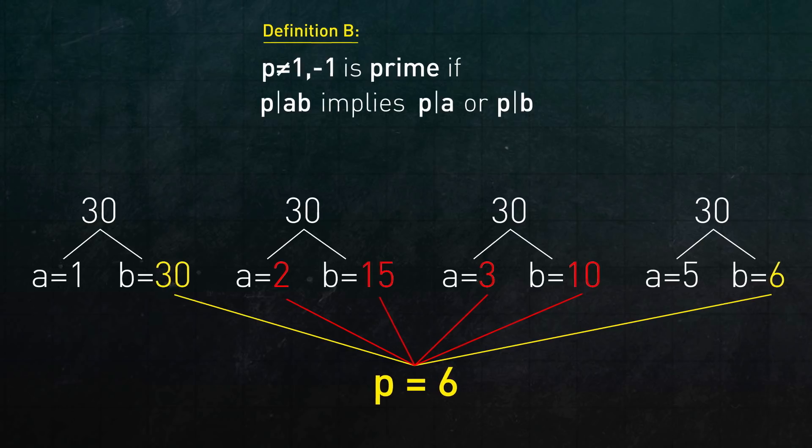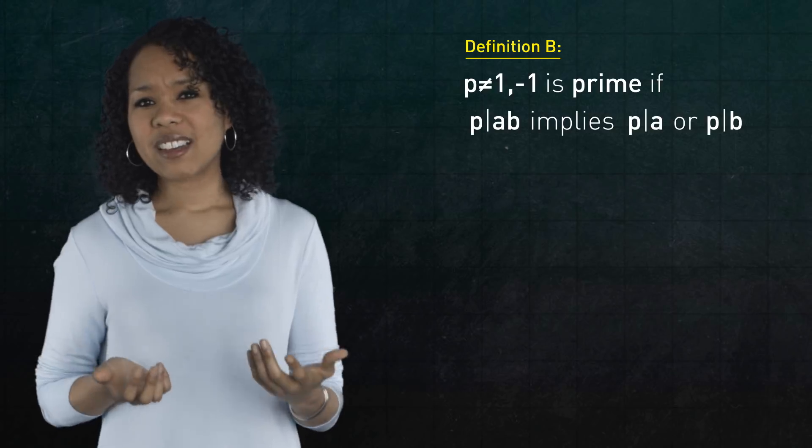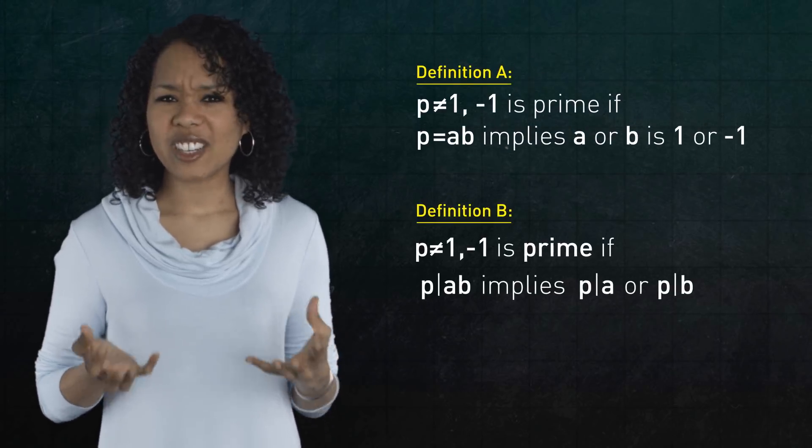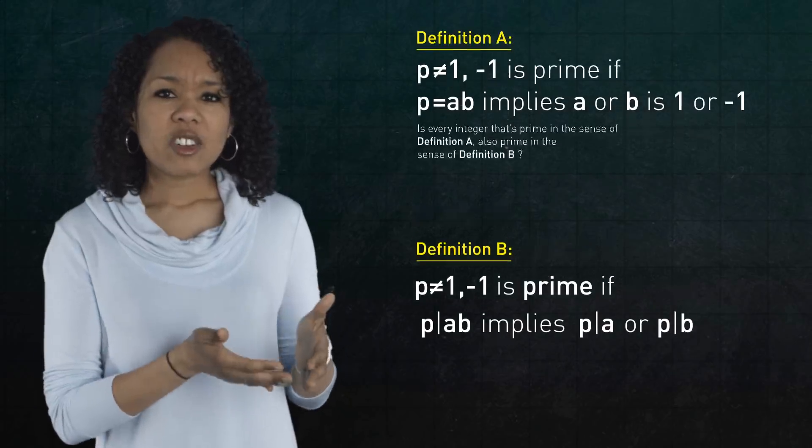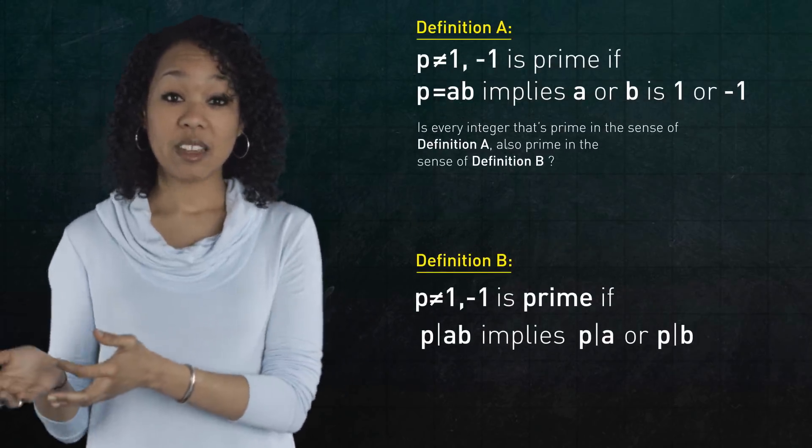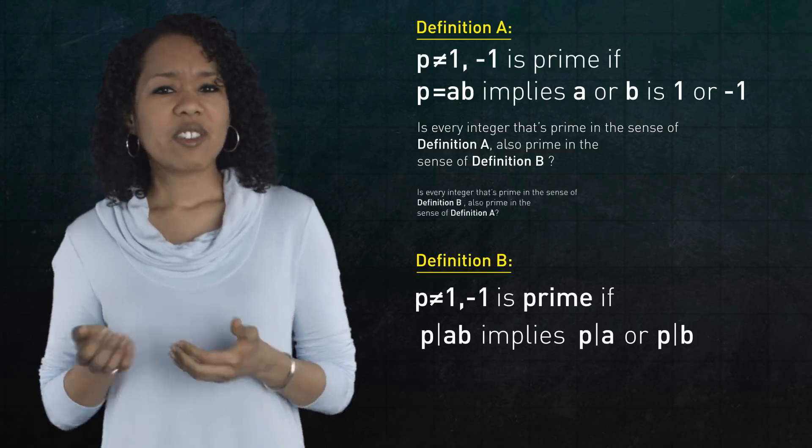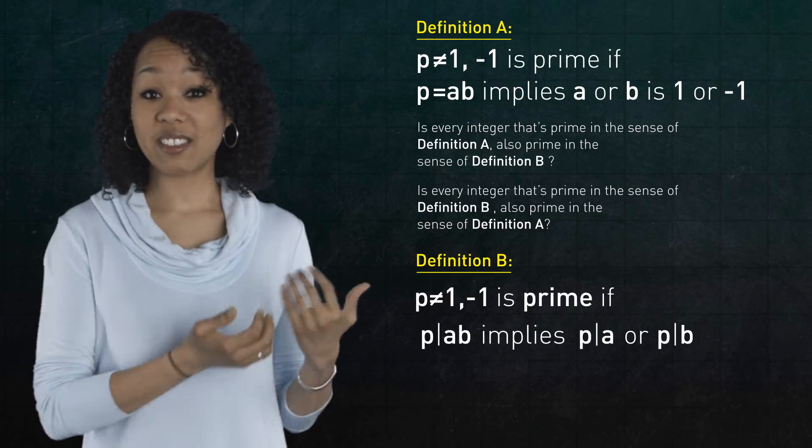So, you might wonder, why don't we ever hear about definition b? Is it because these two definitions are actually conveying the same concept? In other words, is every integer that's prime in the sense of a also prime in the sense of b? And conversely, is every integer that's prime in the sense of b also prime in the sense of a?